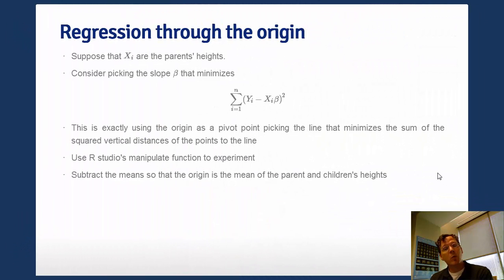Now, let's suppose we wanted to explain the children's heights using the parents' heights. And let's assume we wanted to do it with a line. Well, in order to make things easy for right now, let's force the line to go through the origin. Specifically, it has to go through the point zero, zero.